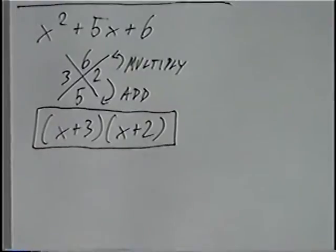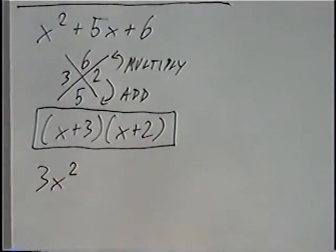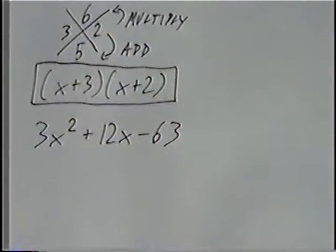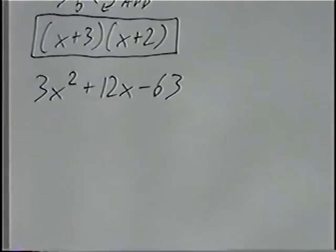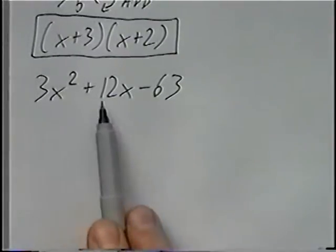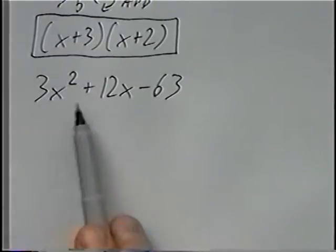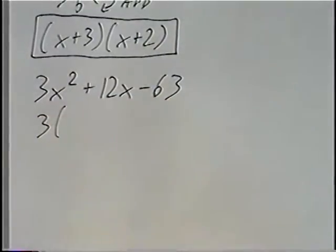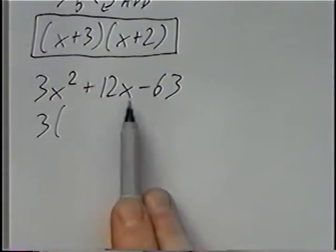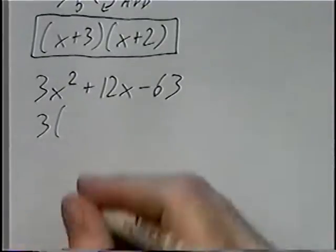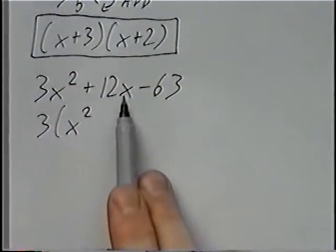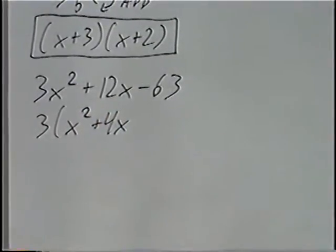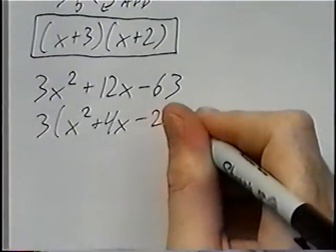For the second and last question of the section, we have 3x squared plus 12x minus 63. Factoring from here, we have three numbers — 3, 12, and negative 63 — from which we can take a common factor out of each. The greatest common factor is 3, so we divide each by 3: 3x squared divided by 3 is x squared, 12x divided by 3 is 4x, and negative 63 divided by 3 is negative 21.